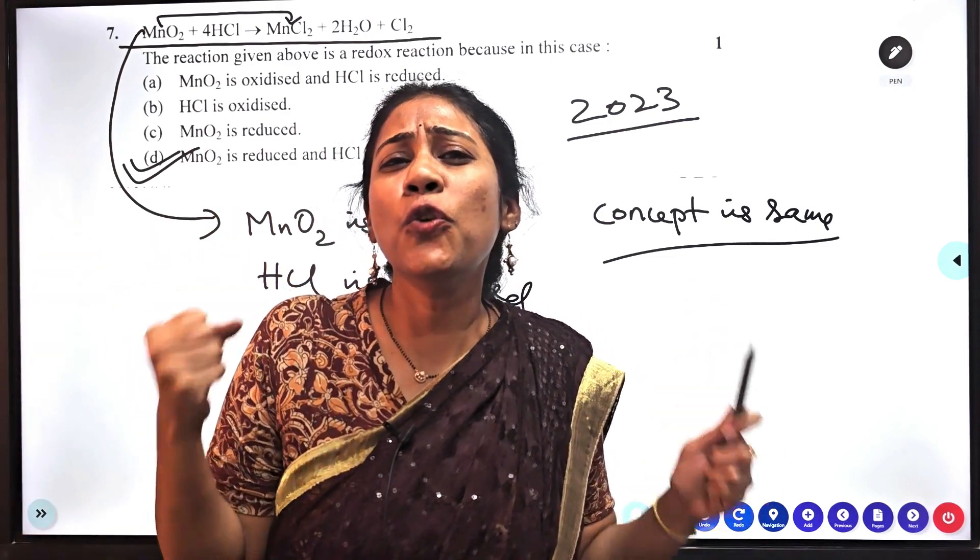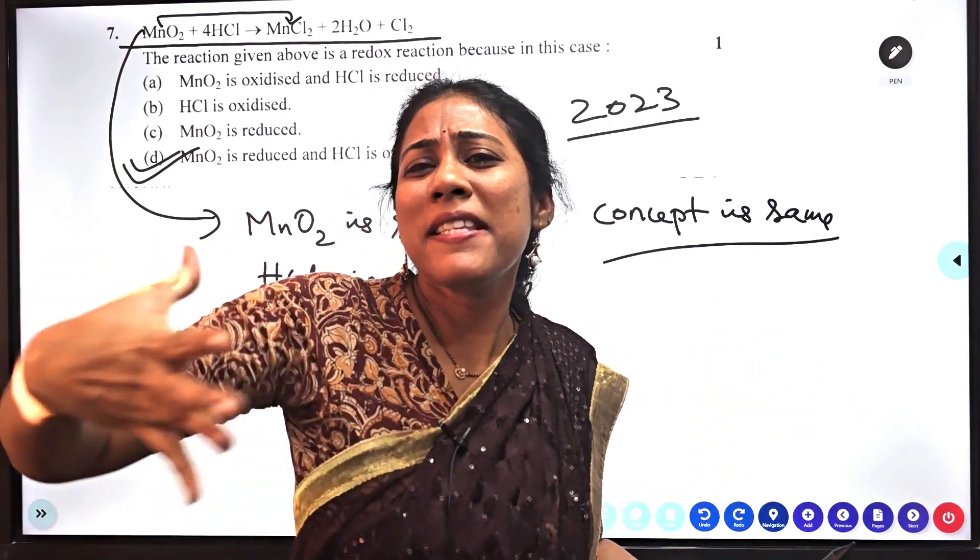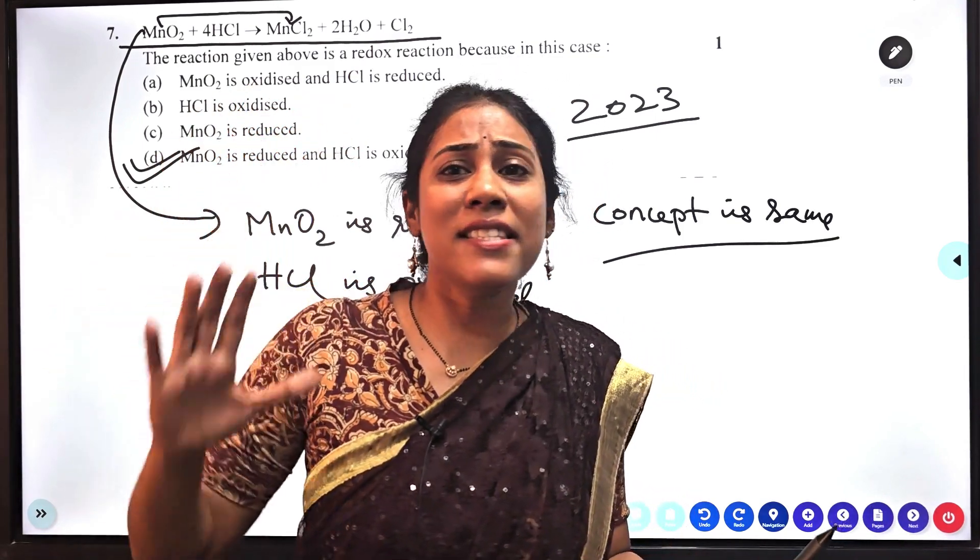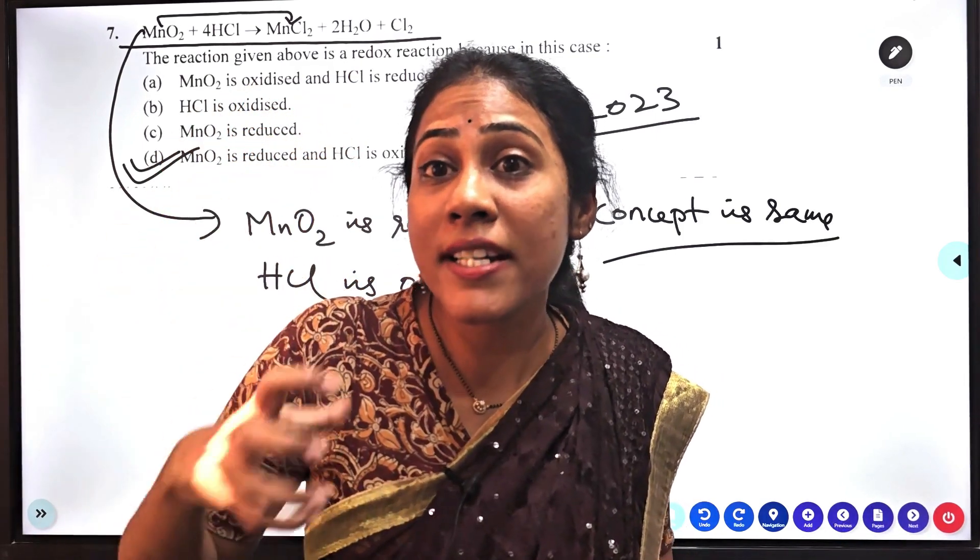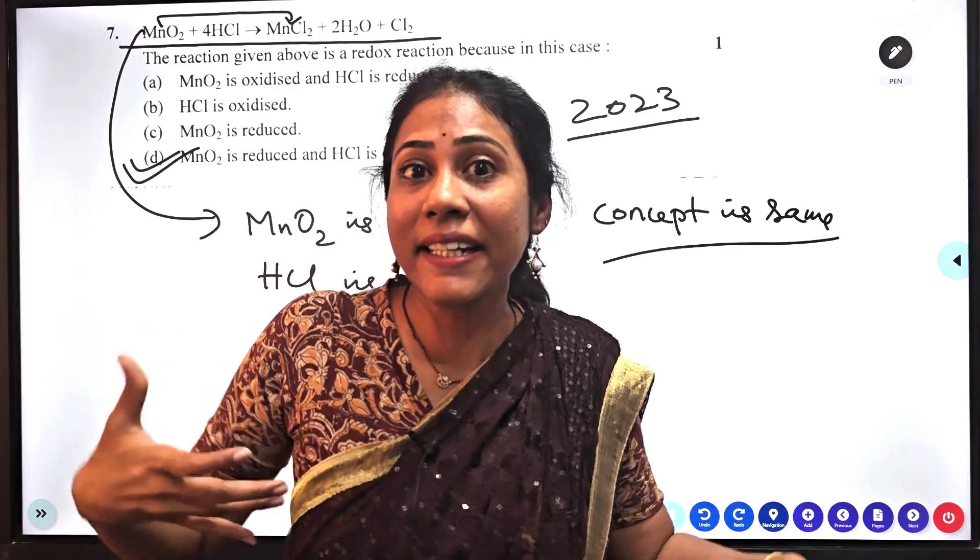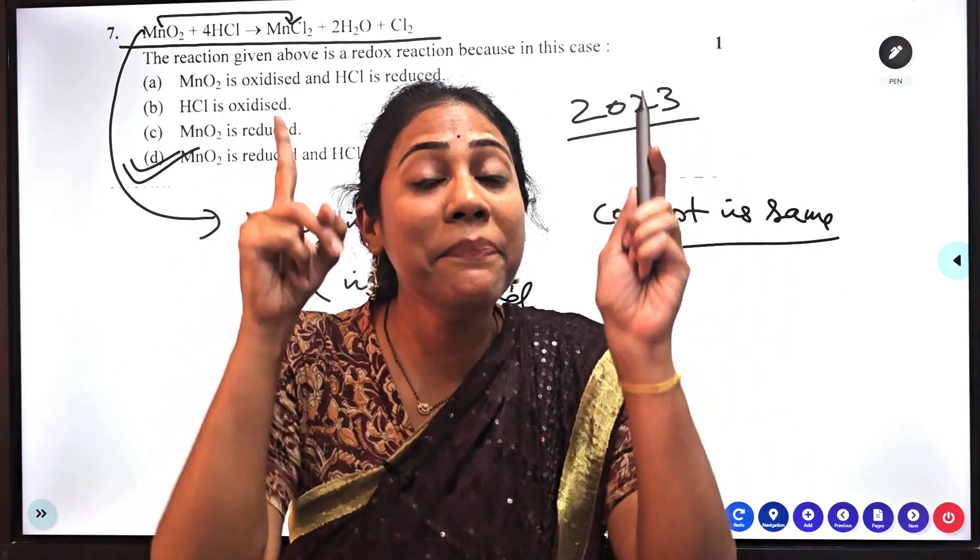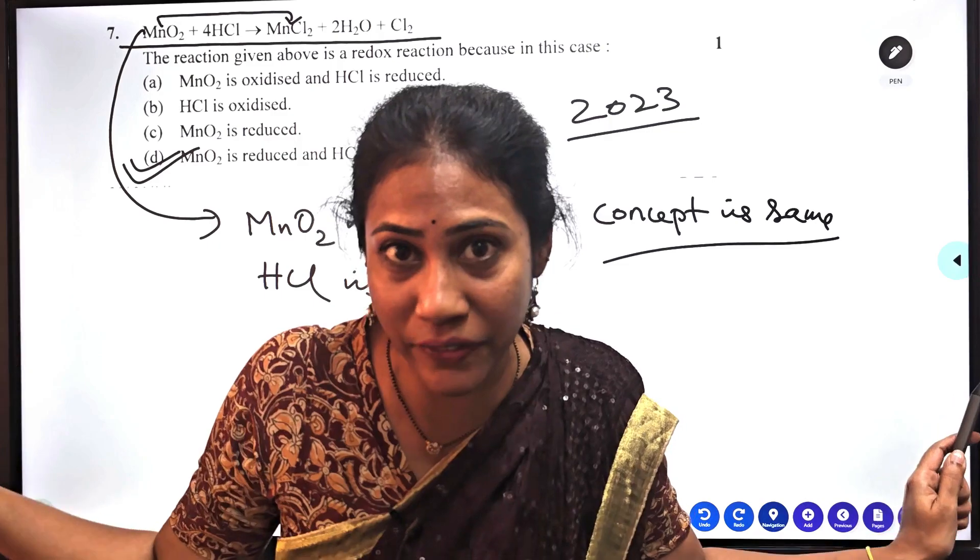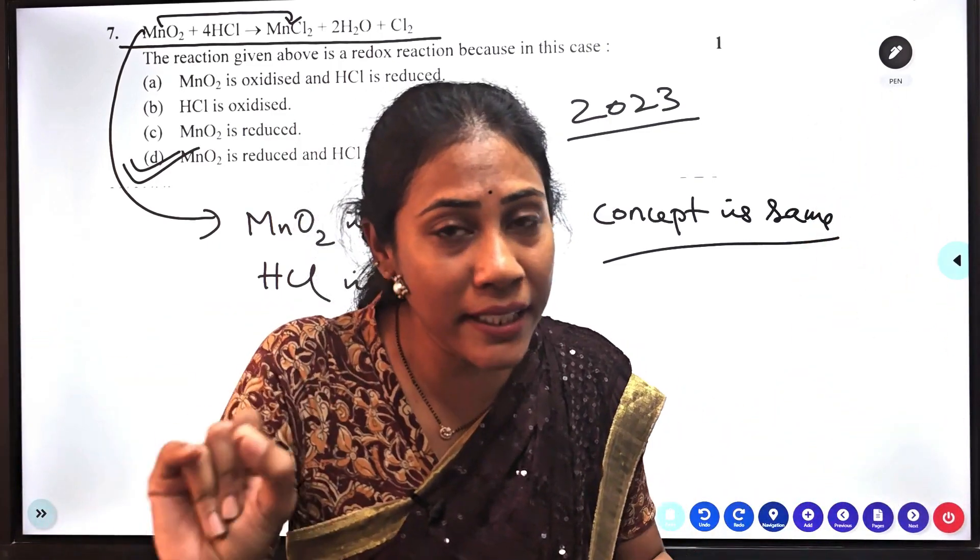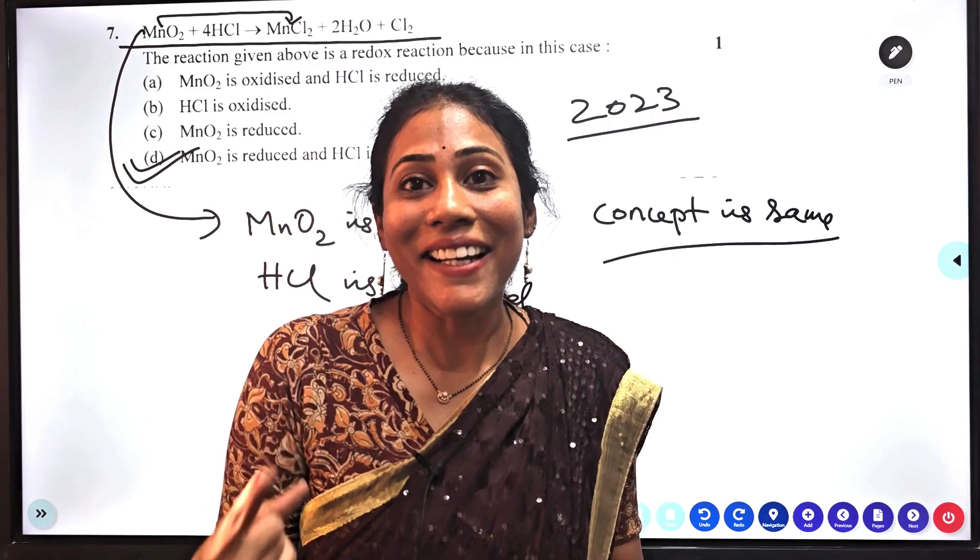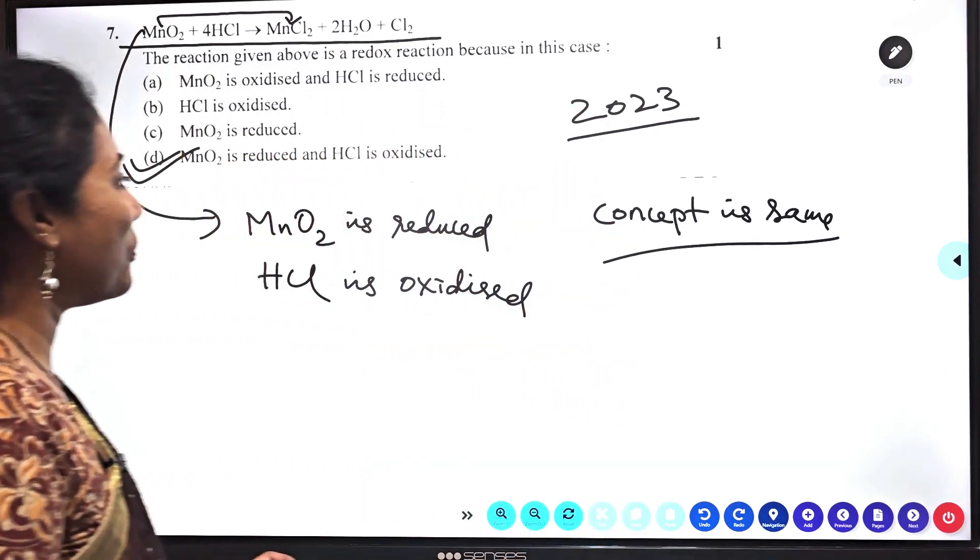Equation is same, but the way they framed the question in the next year was completely different. Likewise, there are so many repeated concepts in the past three to four years of question papers. Almost 60% of the concepts were same. They were repeatedly asked, but in a different way. This point has to be noted. They were asked in a different way. Question is not repeated. Concept is repeated.